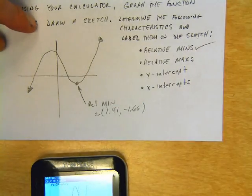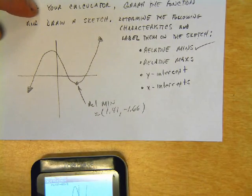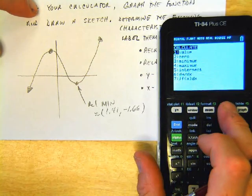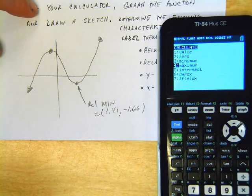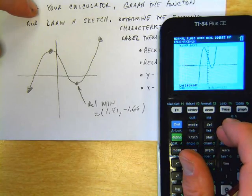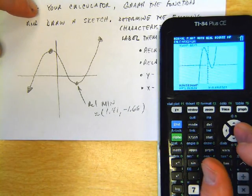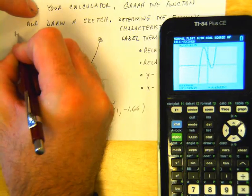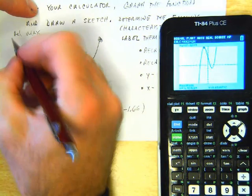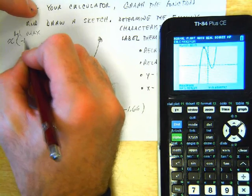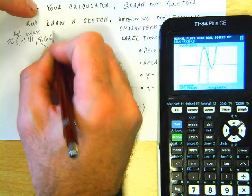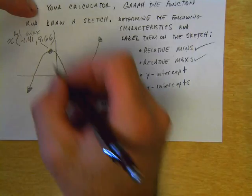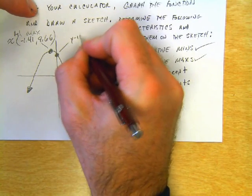Now let's find a relative max, which looks like it's up there. Second, Trace to go to the calculate menu. Number 4 is the maximum. We need to set the left boundary, set the right boundary, and then guess. The max is approximately (-1.41, 9.66). We've done those two things. The y-intercept is here, and we've already determined that's (0, 4).